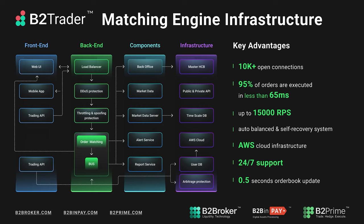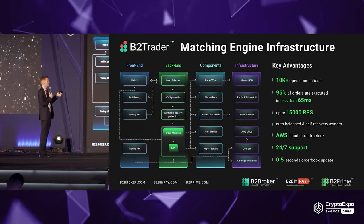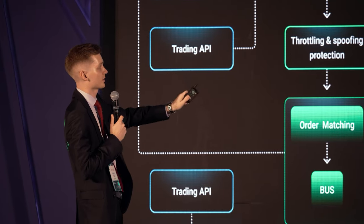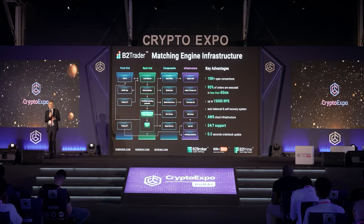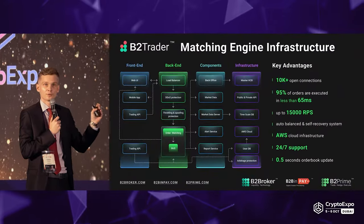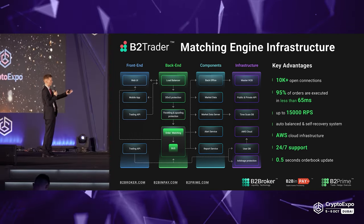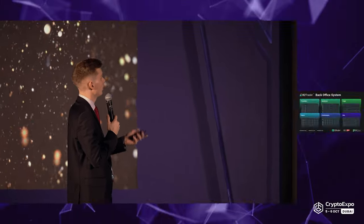The key advantages of our matching engine: it holds 10,000+ open connections simultaneously with 15,000 requests per second, and 95% of trades are executed in less than 65 milliseconds. That's what I was talking about with execution speed — you see the order book, do a market or limit order, and it instantly takes from or adds to the order book. 24/7 support with zero downtime, and every second the order book updates twice — it's constantly updating.